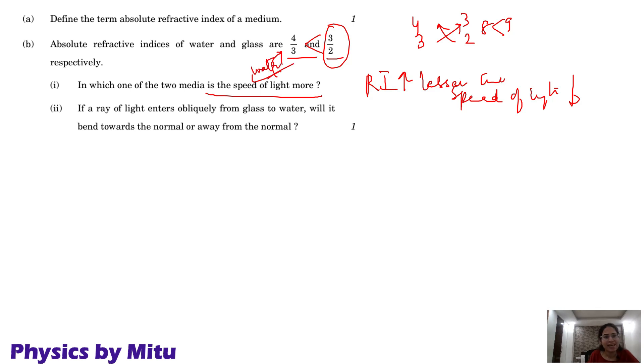If a ray of light enters obliquely from glass to water, will it bend towards the normal or away from the normal? Glass to water. Glass is your denser medium. You can see the refractive index, denser to rarer, the light always bends away from the normal.